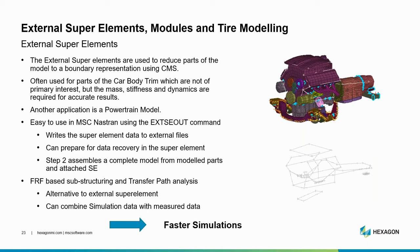We're going to look at three different capabilities: external super elements, FRF-based substructuring, and modules. External super elements are a very elegant way of reducing parts of the model to a boundary representation using the CMS method. In this schematic we see a completed powertrain model — as engineers we're not fully interested in all the details of the powertrain interior, but we want to include all its characteristics in our complete vehicle model. Super elements represent the complete behavior through a small set of nodes and elements. Once done, it will be much faster to use this reduced model instead of the full powertrain model in subsequent runs.